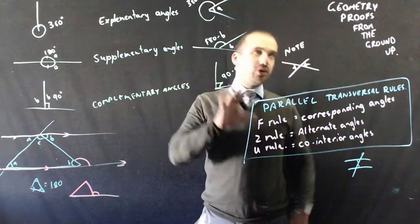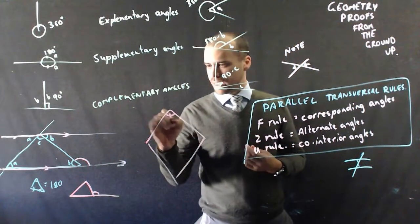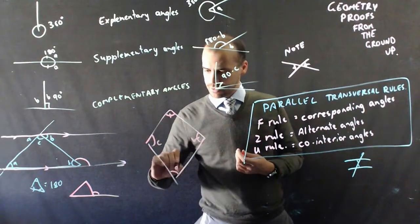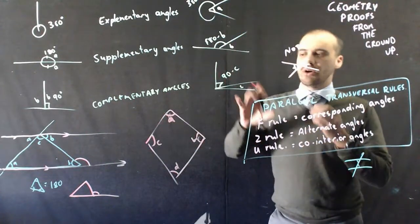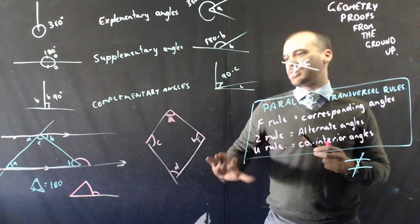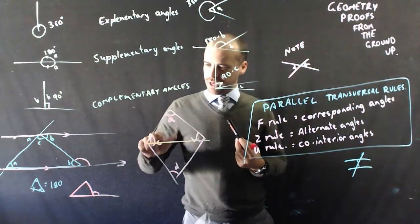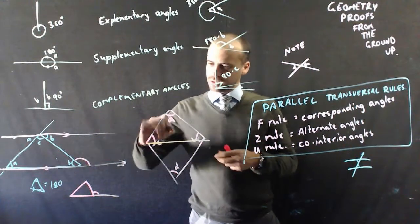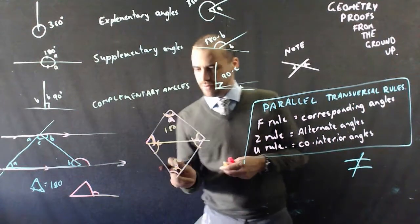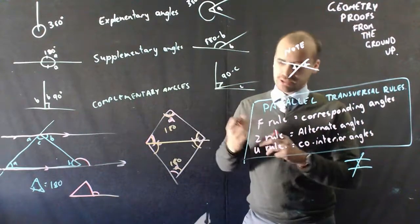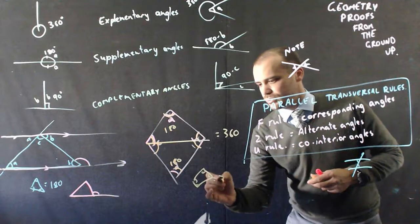The last thing I'll mention is a quadrilateral with angles A, B, C, and D — what do they add up to? It's not hard to see that any quadrilateral can be split into two triangles. The internal angles of one triangle must be 180, and the internal angles of the other must be 180. All those angles together make up the internal angles of the quadrilateral, which gives us 360. So the internal angles of a quadrilateral equal 360.